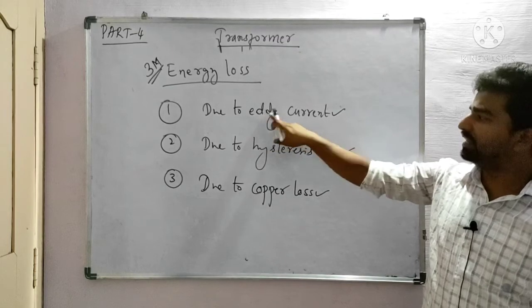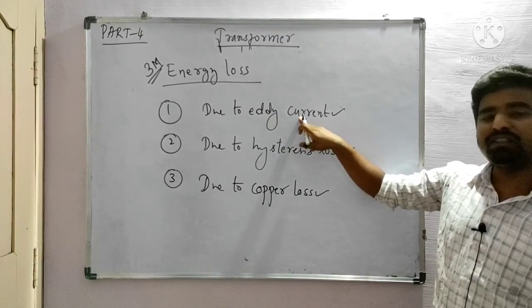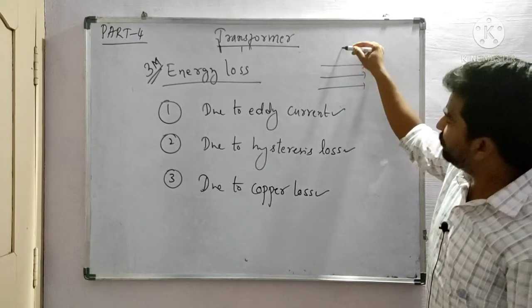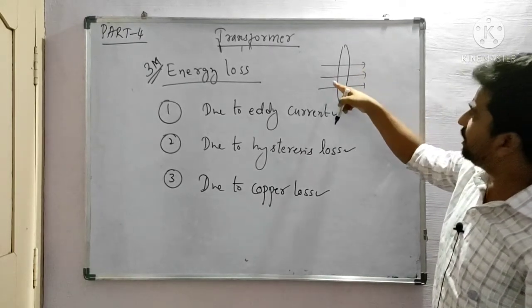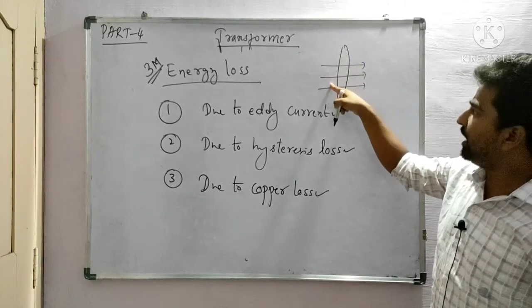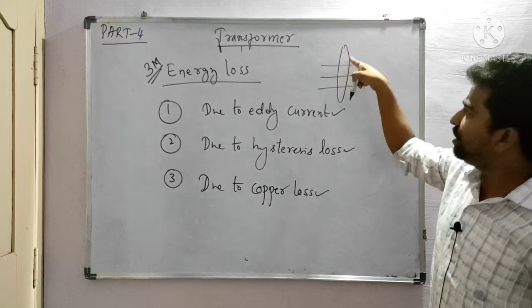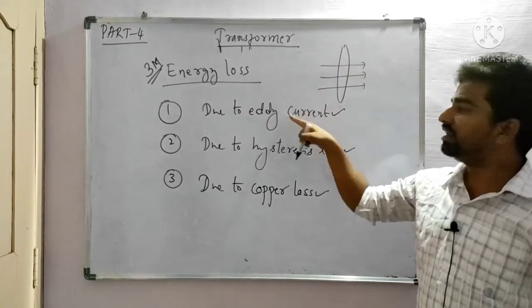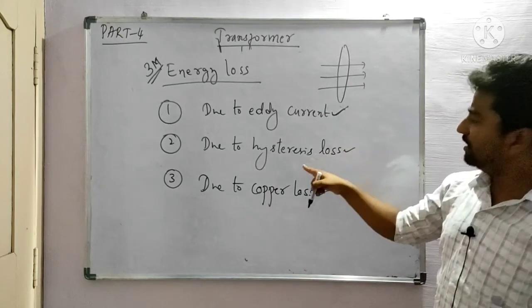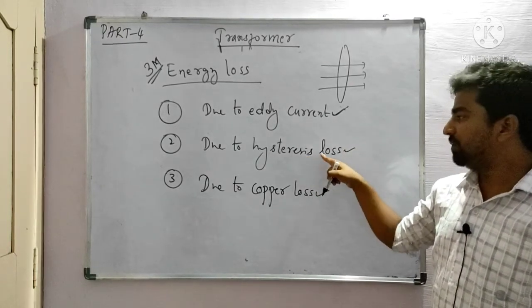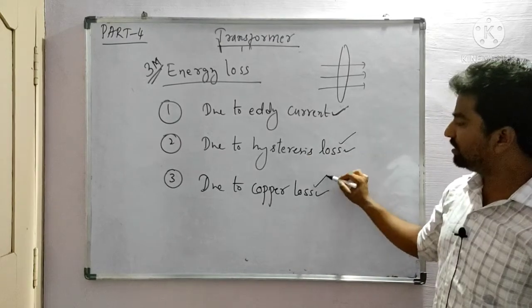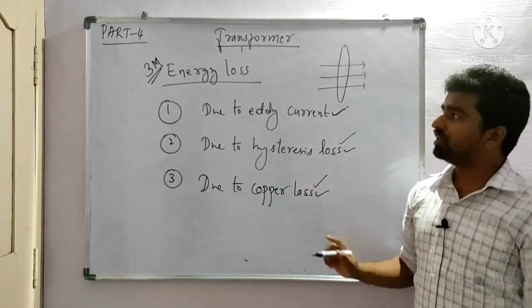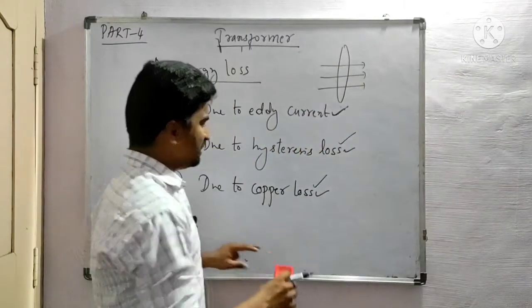Eddy current loss occurs when a thick metal is placed in a varying magnetic field — the magnetic field linked with the conductor changes, inducing currents that flow in concentric circles. Hysteresis loss is related to the magnetic material properties. Copper loss occurs due to the resistance of the copper windings used in the transformer. These are the main causes of energy loss in a transformer. The AC current chapter is now complete.